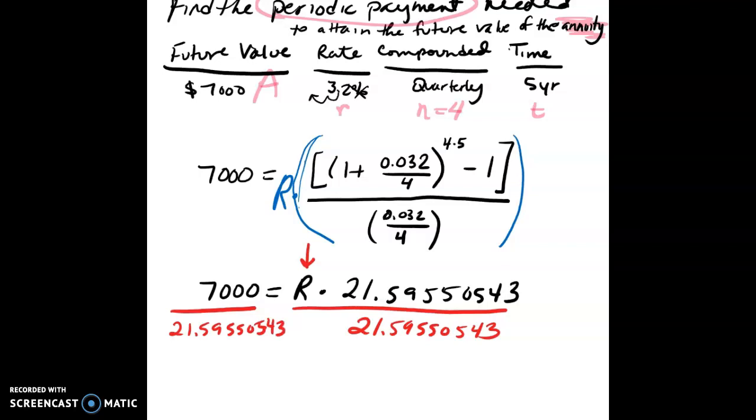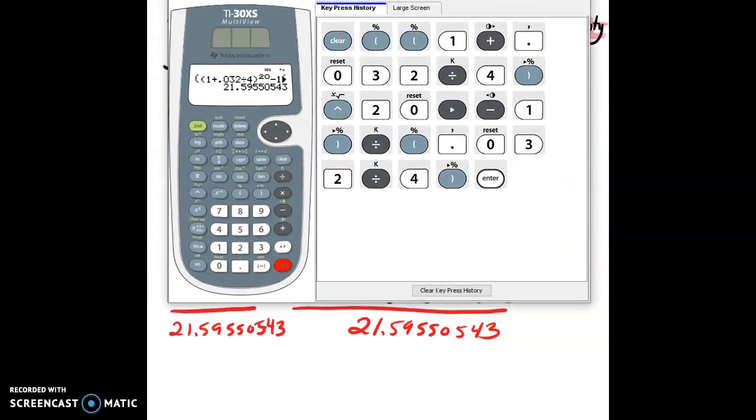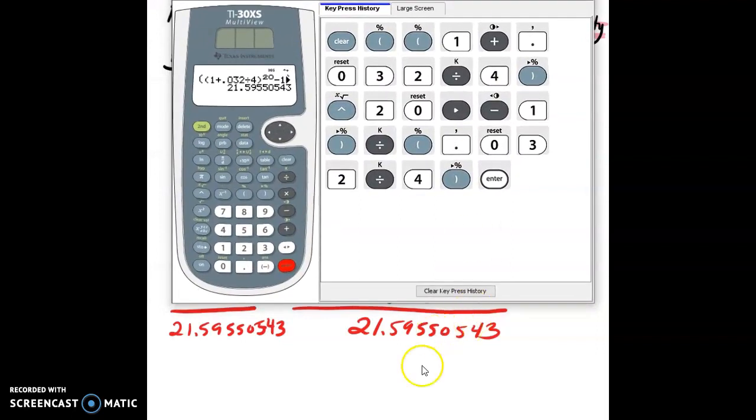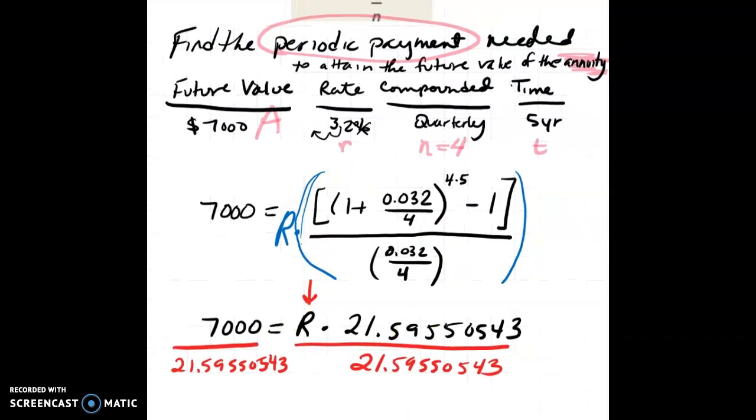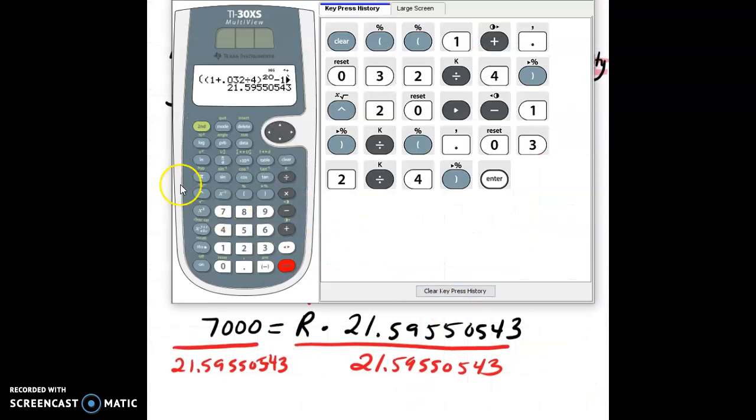And what I do to one side, I have to do to the other to keep the equation balanced. So pulling back over my calculator, I'm going to put in 7,000, and then divide, and then I'm going to retype this answer. Now, if it is on the previous line, what I can do, if your calculator has an ANS, which you see right here, you can hit 2nd, answer,